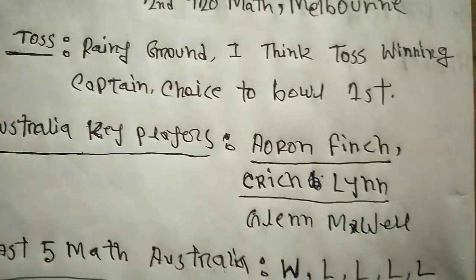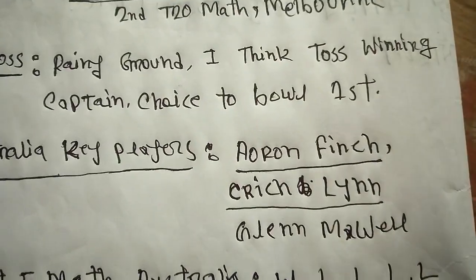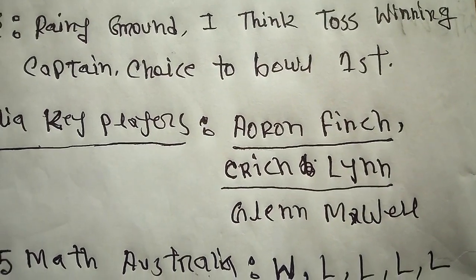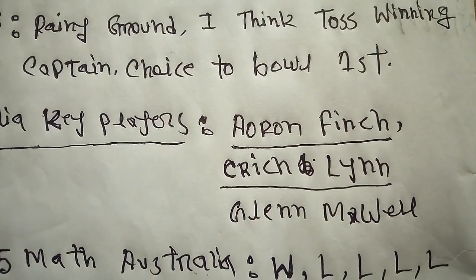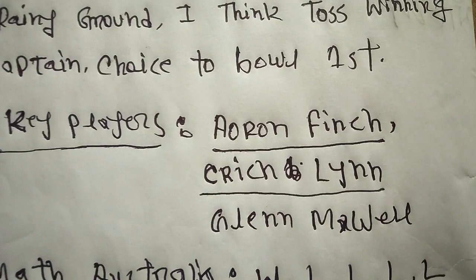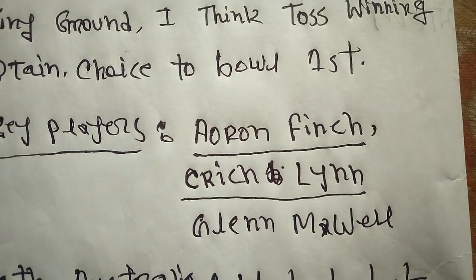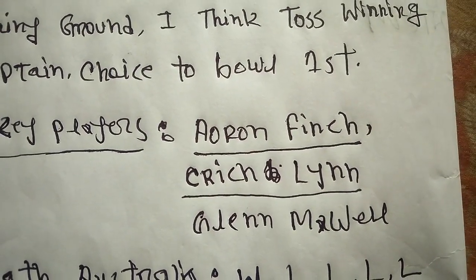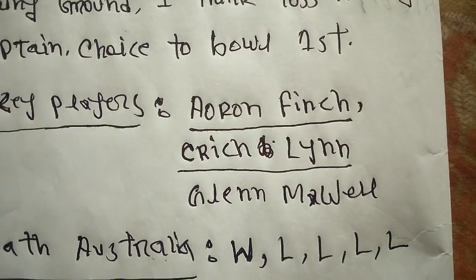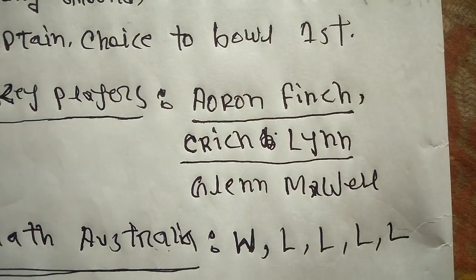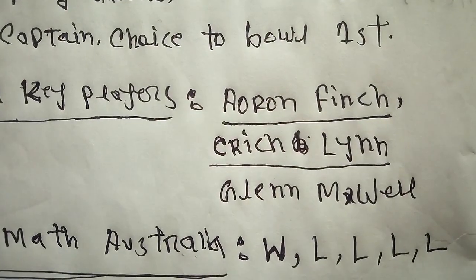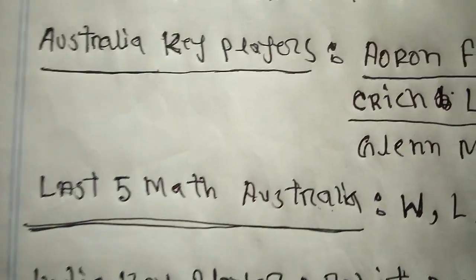Australia's key players: Adam Finch is a top Australia player, ranked number two in T20 batting rankings. Then there is the number one ranked Eric, followed by Chris Lynn and Glenn Maxwell as Australia's key players.